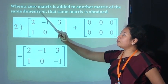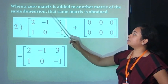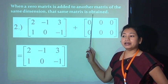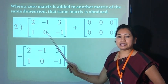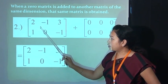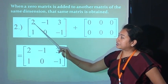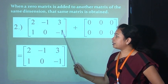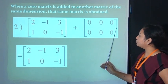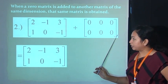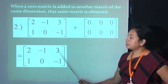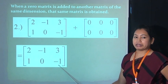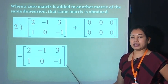When a zero matrix is added to another matrix of the same dimension, the same matrix is obtained. That means if you add a null matrix to an original matrix, the answer is that same matrix. For example, this matrix has dimension 2×3 — two rows and three columns. We add a null matrix of the same 2×3 order, and the resulting matrix is the same: 2, −1, 3, 1, 0, and −1, with dimension 2×3.